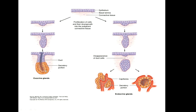The secretory portion is responsible for synthesis of the secretory product, and the duct actually helps in transport of the secretory product to the surface. In endocrine glands, the same process occurs but later there is disappearance of duct cells, resulting in the formation of endocrine glands which are surrounded by blood capillaries that actually help in the transportation of the secretory products.